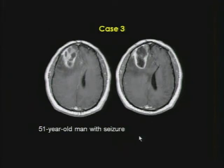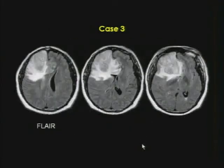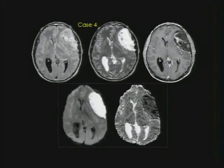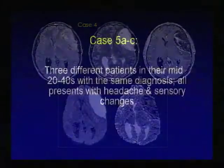Case three is a 51-year-old man with seizure. Same patient, FLAIR imaging. The fourth patient is presenting with a left frontal mass — here is diffusion and ADC map.